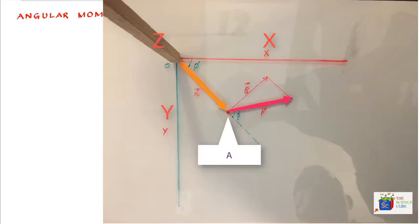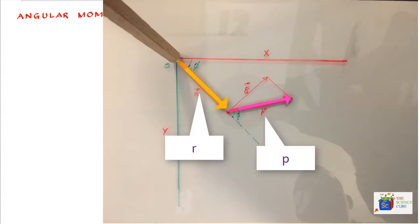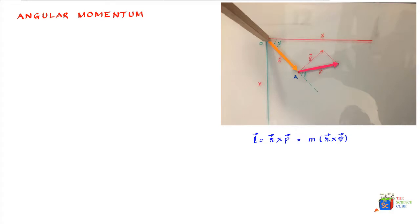Then we can say the angular momentum of this particle about the origin O can be given as the cross product of R and P. So we can write angular momentum L equals the cross product of R and P, which in turn can be written as M into the cross product of R and V. Here R is the position vector of the particle as it moves relative to O. So the position vector R rotates about O.